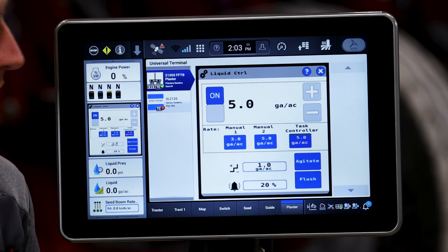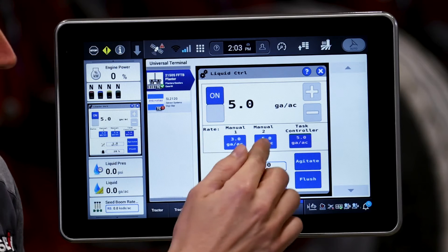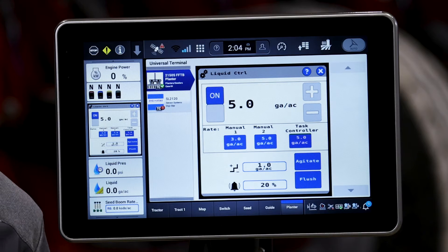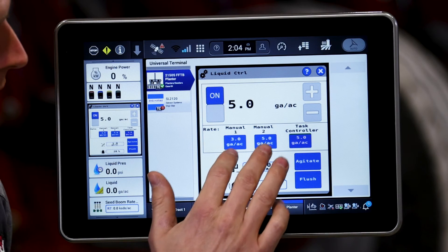We've got a couple of different rates that we can choose from. Manual 1 and Manual 2 are the rates that you defined in the planter work condition setup that we reviewed in our previous videos.